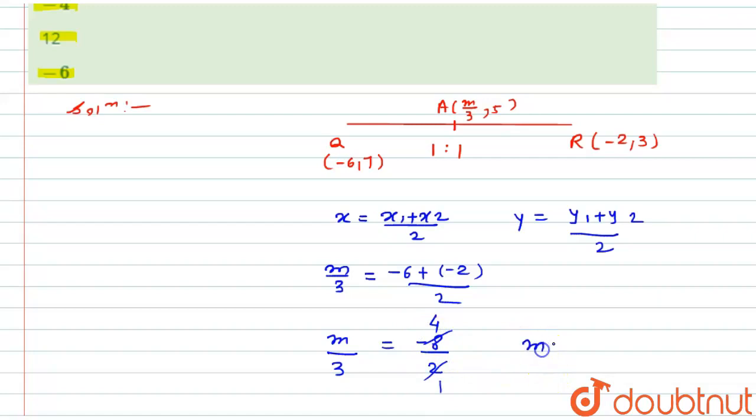So here the value of M will be -4. This 3 will go to that side, get multiplied with -4, so I will get M = -4 × 3 = -12.